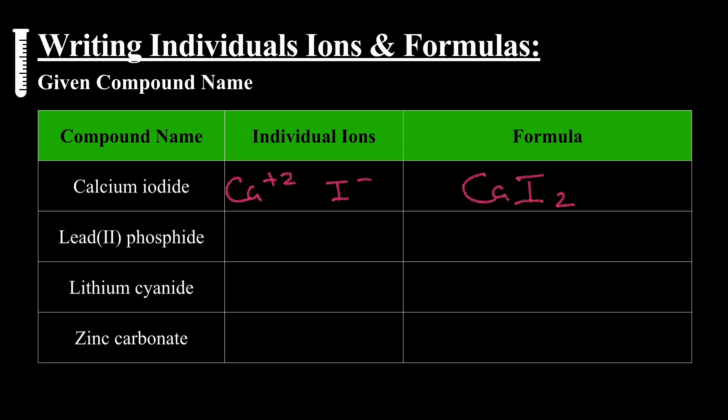Lead (II) phosphide. Well, lead is a transitional metal, and it has a Roman numeral, so that's the charge. So lead plus two, phosphide, known group charge negative three. So Pb3P2 when they've crossed over.